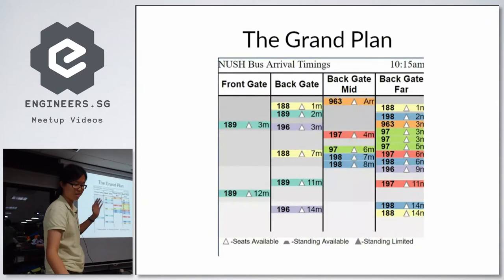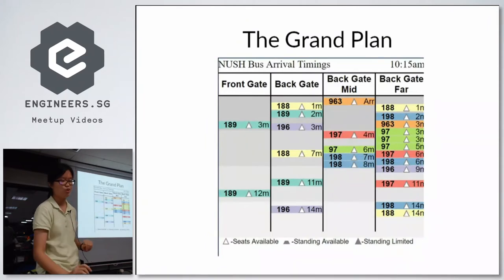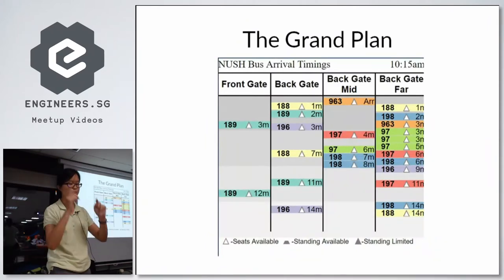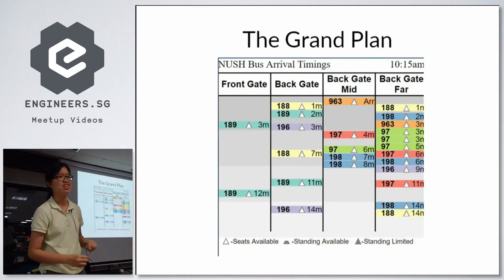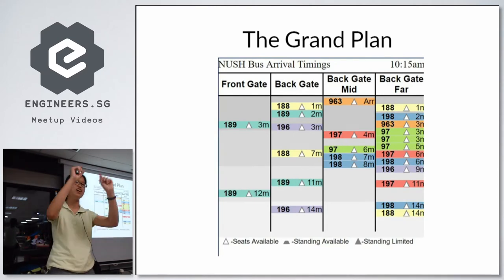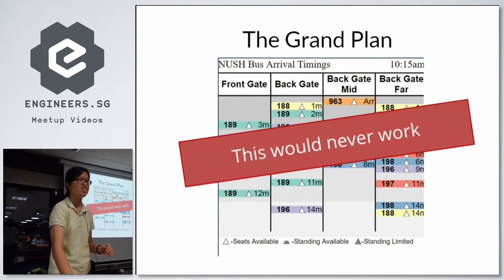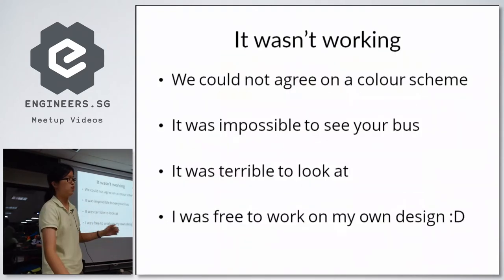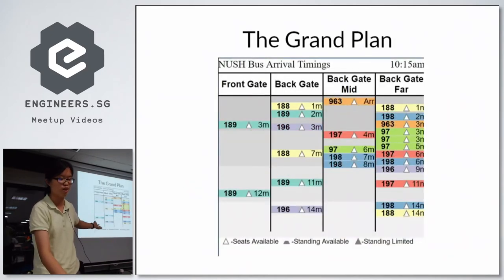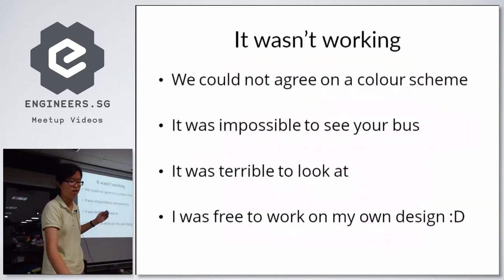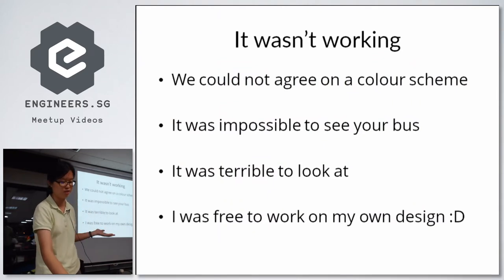So this was my design, written in code. We had this grand plan that everyone would memorize which color their bus is, then go to the screen, see how high that color is on the chart, and decide how soon their bus is coming. This was obviously never going to work. There were a few problems — we had four different color schemes and no one could agree which was best. It was impossible to see where your bus was. It was terrible, and my friend gave up on the timeline design, so I could work on my own design.